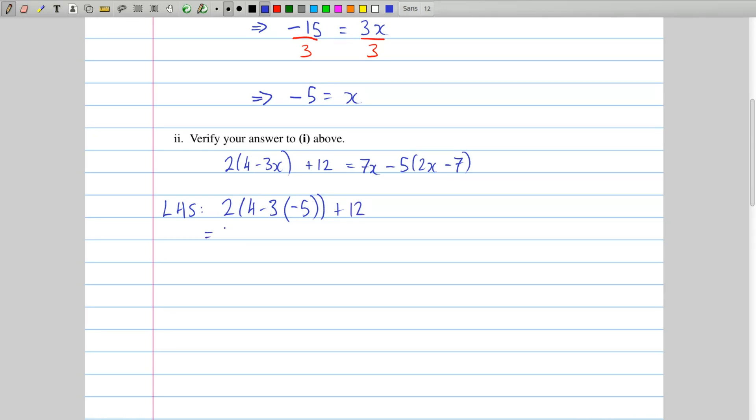We continue that then, so we get 2 multiplied by, this is 4 minus 3 times minus 5, and that's the same as 4 plus 15, plus a 12. So 2 by 19 plus 12, 38 plus 12, and that turns out to be 50.